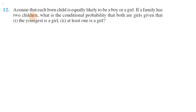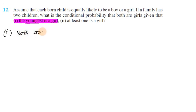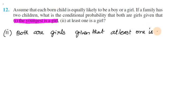Second sub-division: if a family has two children, what is the conditional probability that both are girls given that at least one is a girl? 'Both are girls' is event E, and the condition 'at least one is a girl' is event F.